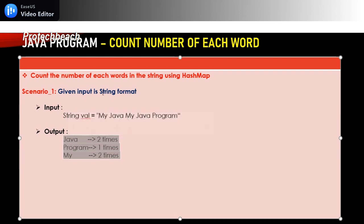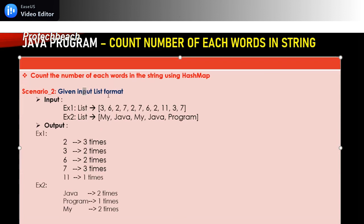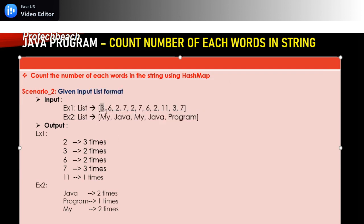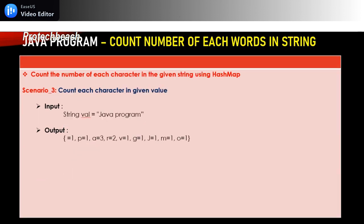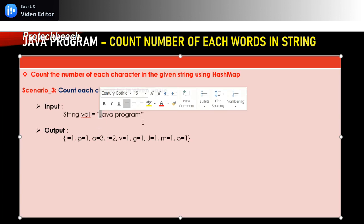The next is the second scenario: if the given input is in the form of a list — for example, a list of integers or strings. If they provide input as integers, three is repeated two times, six is repeated two times. They are expecting output something like this. If they provide the input as a string list, then the output will be something like this. The third scenario: the input is a string but the output expected is how many times each character appears in the given input string.